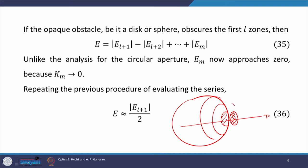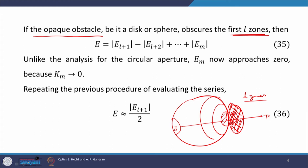Now if the size of the disk is a bit bigger, it will cover more Fresnel zones. Let us assume that the opaque obstacle or disk is covering the first L zones. The size of this disk is such that the first L zones are not visible — they are not contributing at the point of observation P. Since the first L zones are covered, only the rest of the zones will contribute at point of observation P.